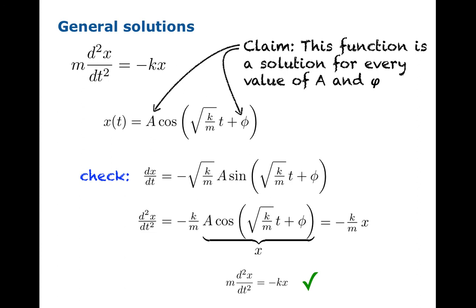One of the things to notice is, this is a second-order equation, and we have two parameters, A and phi, that we can pick to be whatever we want. And this is generally the case. The higher the order of a differential equation, the more free parameters there will be in your general solution.